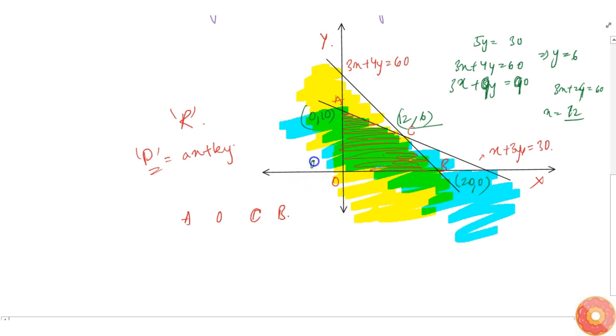Point O is 0 comma 0. So we have these four points: A is 0 comma 10, O is 0 comma 0, C is 12 comma 6, and B is 20 comma 0.